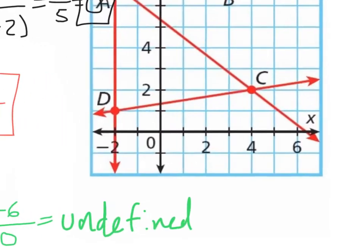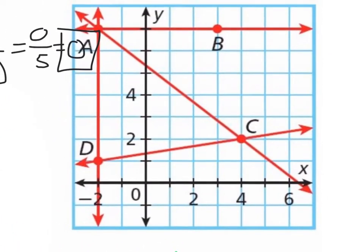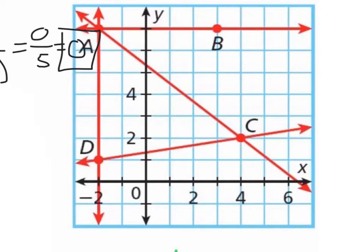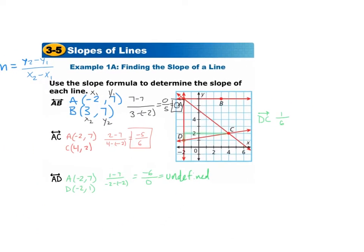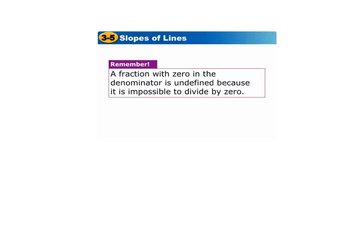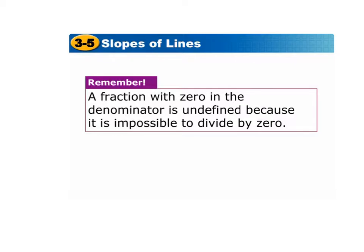Let's look at line DC. We can just look at it and see what our rise is and what our run is. The rise is 1 and the run is 6, so the slope would be 1 over 6. A fraction with 0 in the denominator is undefined because it's impossible to divide by 0. So if you have any number — say 7 over 0 — it will always be undefined.